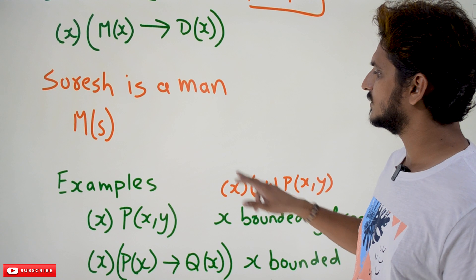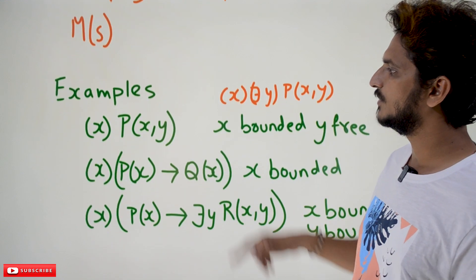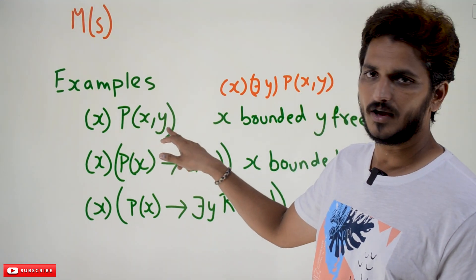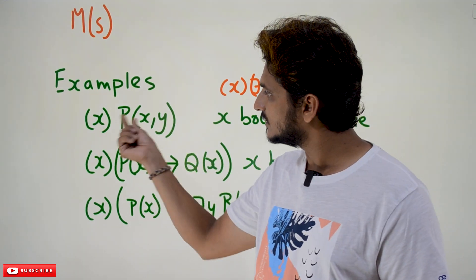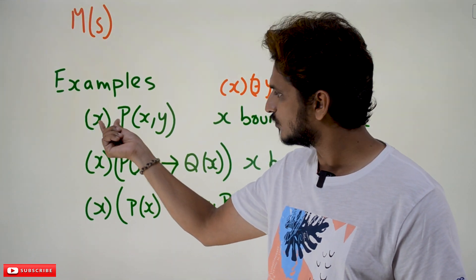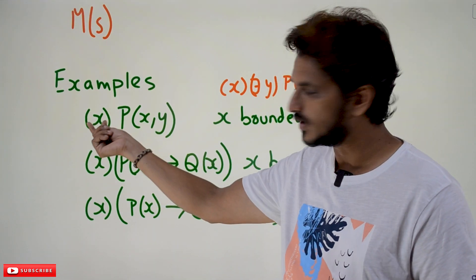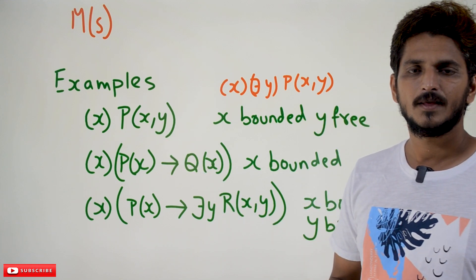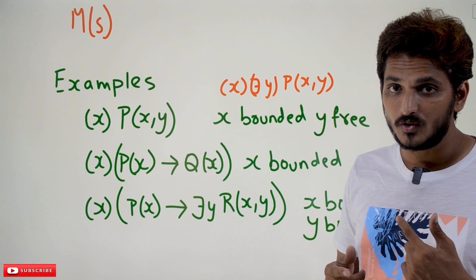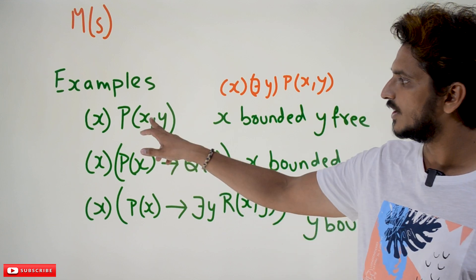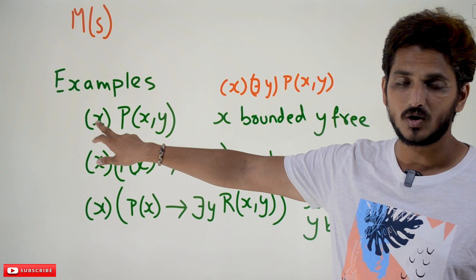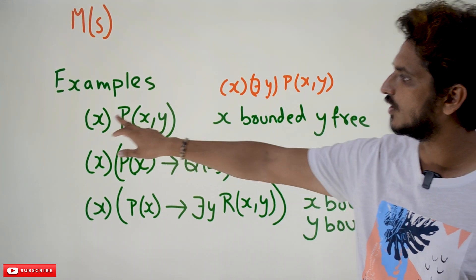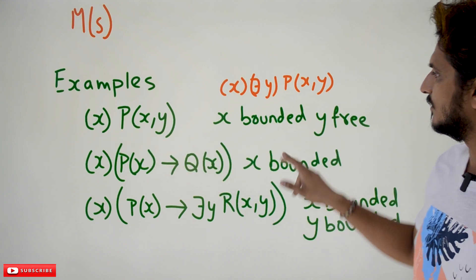Now we will take some examples and understand what is a free variable and what is a bounded variable. Let's take this example: for all x, P(x, y). Our quantifier is placed before this statement, so the scope of this quantifier belongs to P(x, y). In this, x is a bounded variable because it is bounded by a quantifier, while y is a free variable.